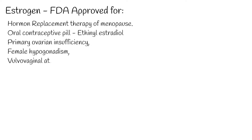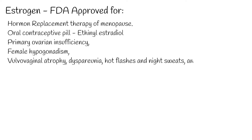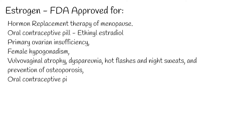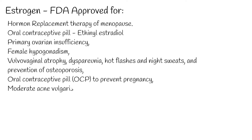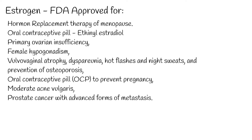FDA-approved indications include: primary ovarian insufficiency, female hypogonadism, symptoms associated with menopause including vulvovaginal atrophy, dyspareunia, hot flashes and night sweats, and prevention of osteoporosis. Also included are oral contraceptive pill (OCP) to prevent pregnancy, moderate acne vulgaris, and prostate cancer with advanced forms of metastasis.